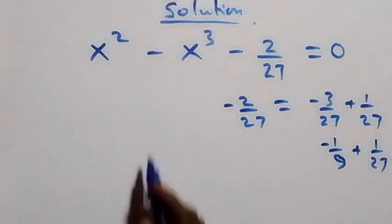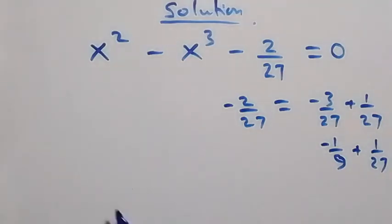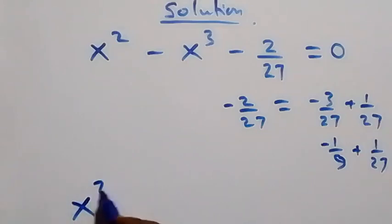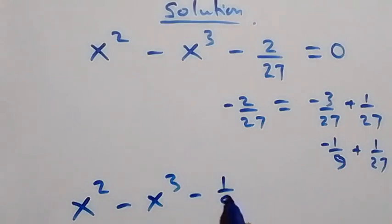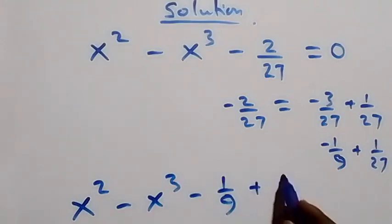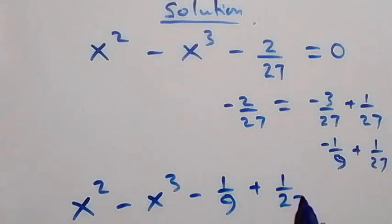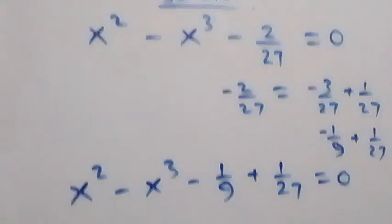So it implies we can write minus 2 over 27 as minus 1 over 9 plus 1 over 27. Then this equation becomes x squared minus x cubed minus 1 over 9 plus 1 over 27 equals to zero.